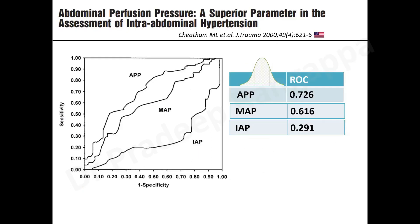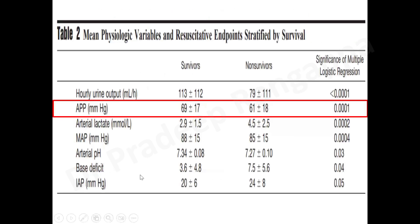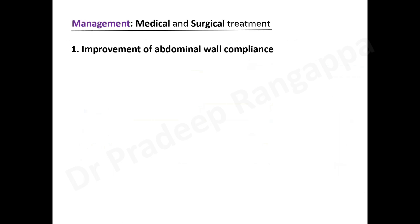Abdominal perfusion pressure is more indicative of microcirculatory compromise than IAP alone. The key target from the study: patients who maintained an abdominal perfusion pressure of approximately 70 mmHg had better survival compared to those around 60 mmHg — and this was statistically significant. For any patient with IAH, target an APP of 70 mmHg, which is associated with good survival.